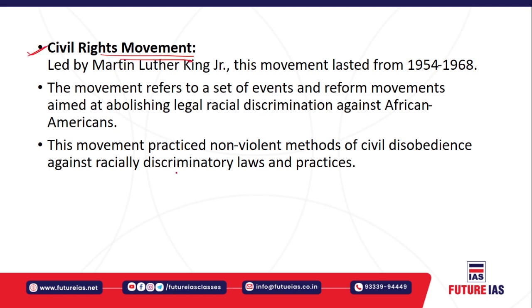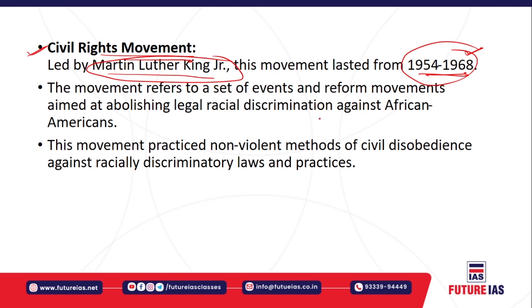The civil rights movement was started by various civil rights activists. For example, in India, Dr. B.R. Ambedkar started the civil rights movement to give equality rights based on the fundamental principle that every person has equal fundamental rights. Similarly, in the US, Martin Luther King Jr. led a movement that lasted from 1954 to 1968. There was racial discrimination in the USA specifically against black persons, just like in India we have caste-based discrimination where lower castes or untouchables are discriminated against by upper caste people.